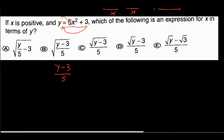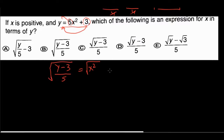Keep in mind you must move the plus 3 first before dividing by 5, because the addition term takes precedence. After moving the 3 over, divide by 5 to get y minus 3 over 5 equals the square root of x. Then take the square root — the only remaining step — giving x equals the square root of y minus 3 over 5.